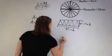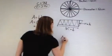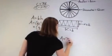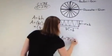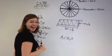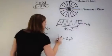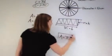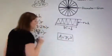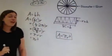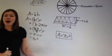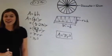So the area is equal to πr². We now have the formula for the area of a circle: Area = πr².